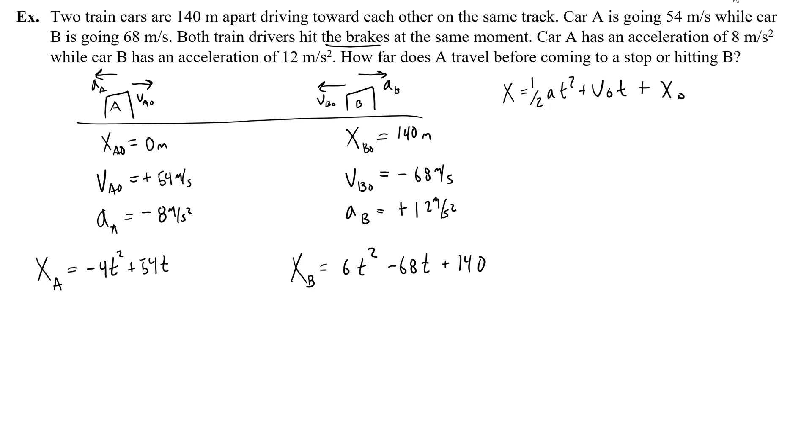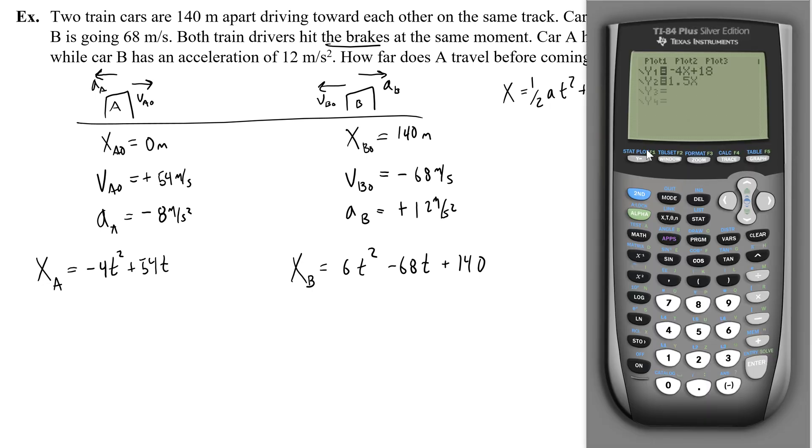At this point, I'm going to get out my graphing calculator, and I'm going to go to Y equals, clear anything that's there, and put in my equations. So for A, I've got negative 4, negative 4, we'll use x instead of t. You could change it to t if you want, but it's not necessary. Plus 54x, so that's the first equation. Then I've got 6x squared minus 68x plus 140. All right, now let's graph it.